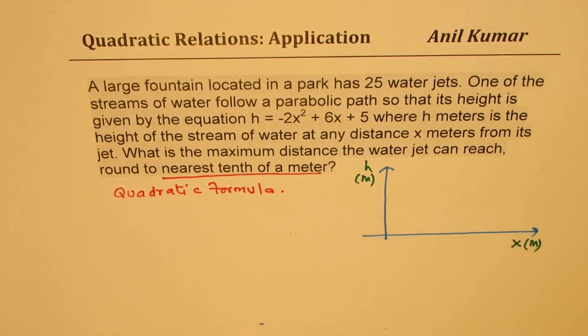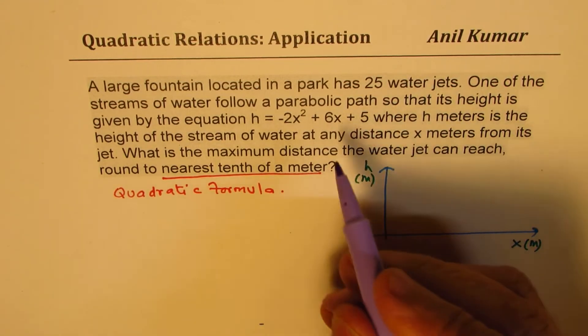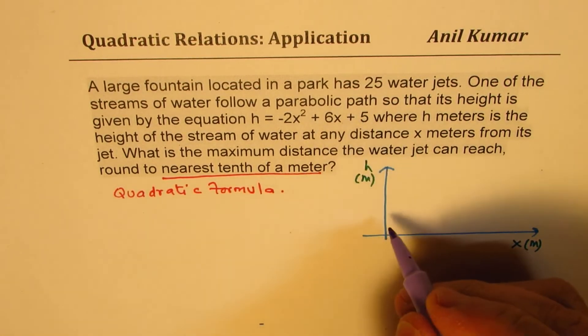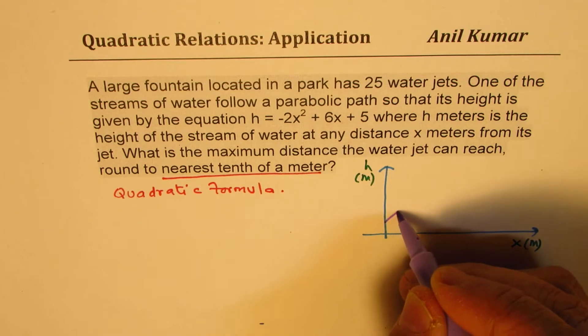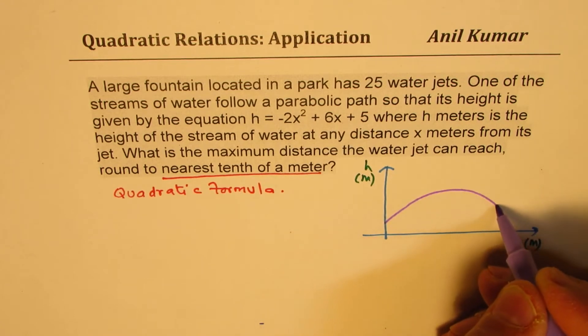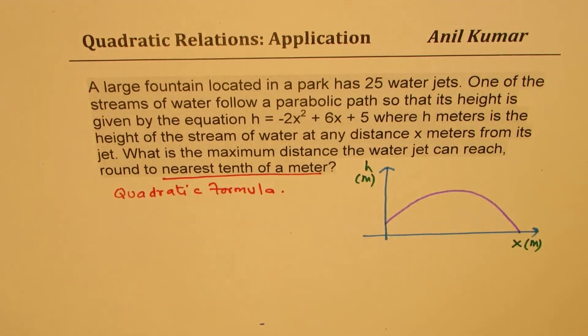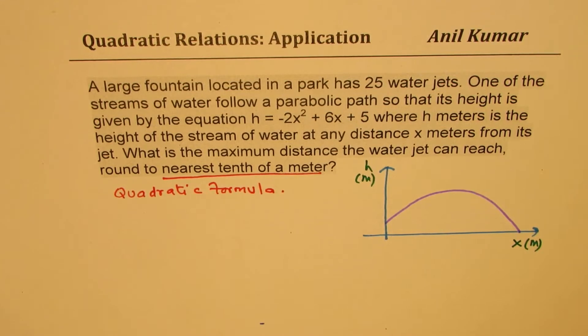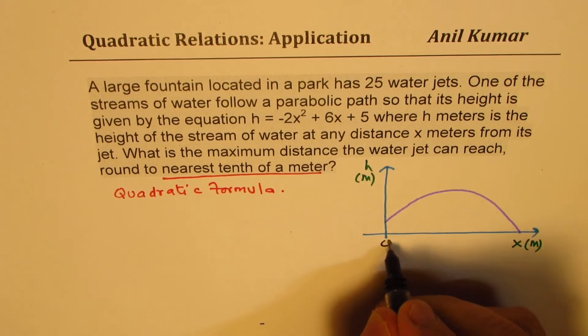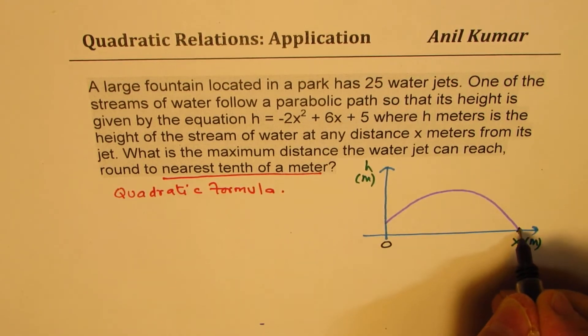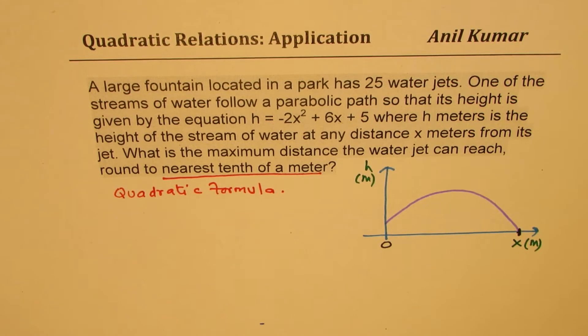So at height equals to 0, at x equals to 0, the height is 5, so let's say it starts from somewhere here and that is the parabolic path taken by the water jet. We need to find the maximum distance, that is to say from here to which point. So that position we need to figure out.